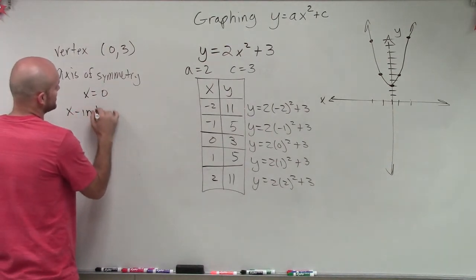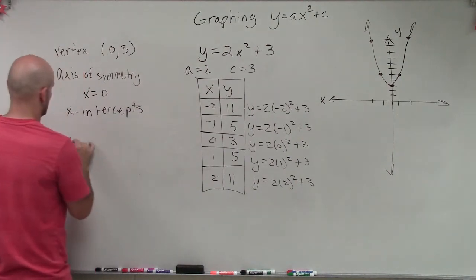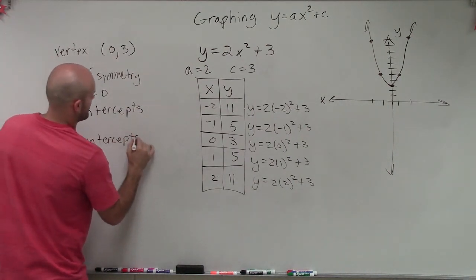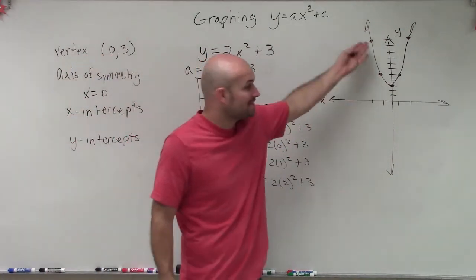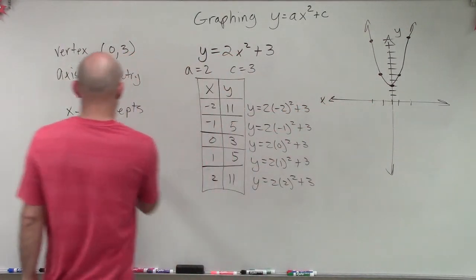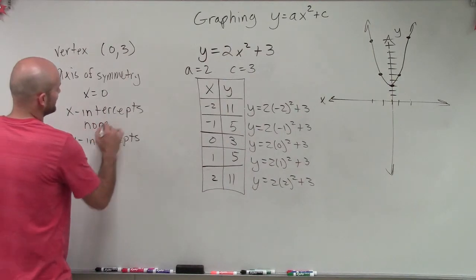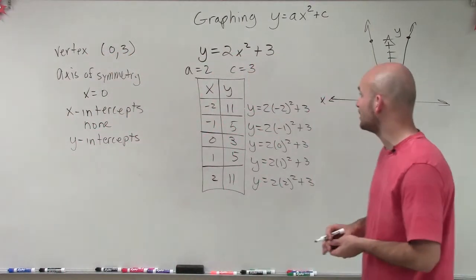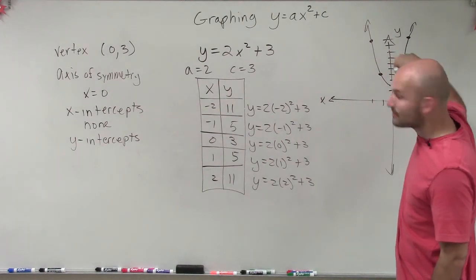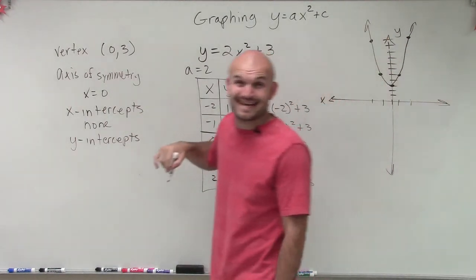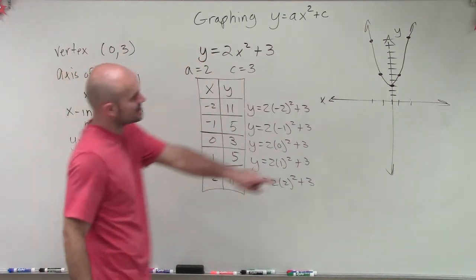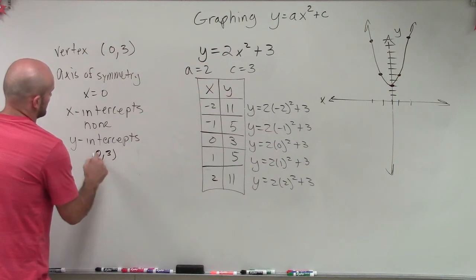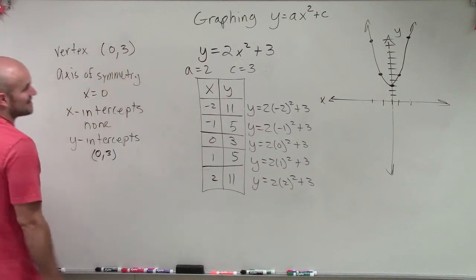And now, we also have some new updates for x-intercepts and y-intercepts. If you can see here, the graph does not intersect the x-axis at all. We're going to learn more about this later. They're what we're going to call some imaginary complex intercepts. But for right now, we can just say there are not any x-intercepts. And the y-intercept now crosses at the point 0, 3. So the y-intercept is exactly the same as the vertex.